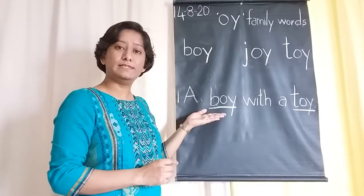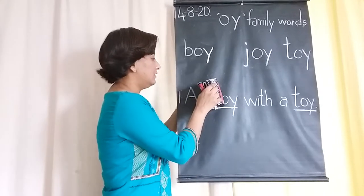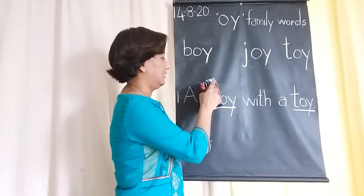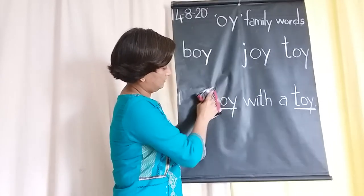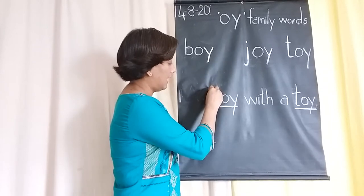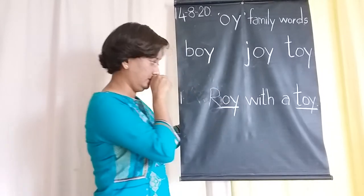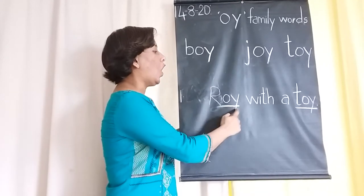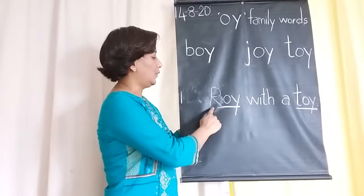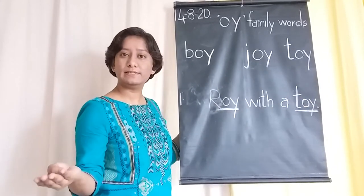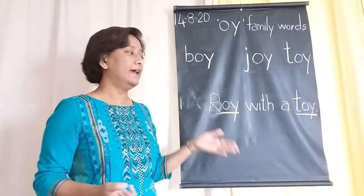We can make a new sentence by replacing a few letters. I'm going to add letter R to the OI blend. What sound does it make? Roy. Roy is the name of a boy. Roy with a toy — that's a new sentence. So if we add new letters to the blend, a suitable one, it makes a new word and we can use it in a sentence.